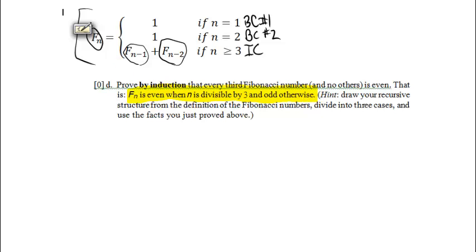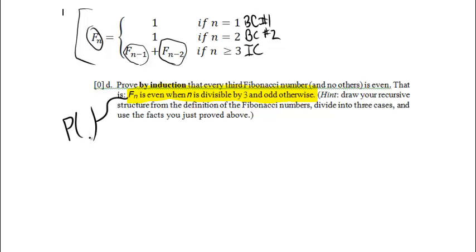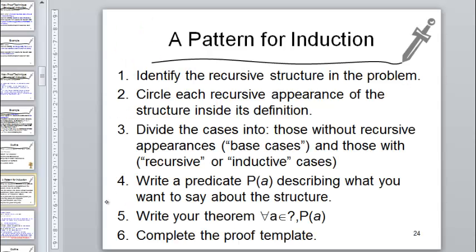That's not really a theorem by itself; implicitly it means this is true for every legitimate value of n. Since we start with n equals 1 and move up, it's true for all positive integers n. We label this as our predicate, parameterized by n. Our theorem is: for all positive integers n, P of n holds.